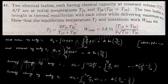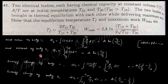Question 141 says: two identical bodies each having thermal capacity at constant volume Cv = a/T are at initial temperatures T₁₀ and T₂₀. The two bodies are brought into thermal equilibrium while delivering maximum work. We need to find the equilibrium temperature and the maximum work. The heat taken by body one is dQ = Cv dT, integrated from T₀ to Tf.